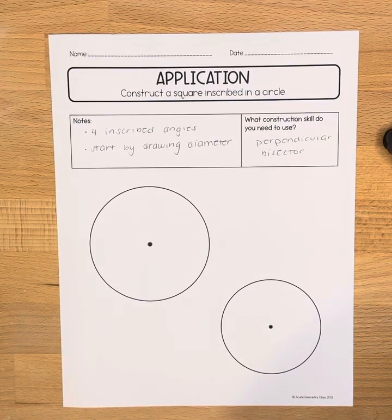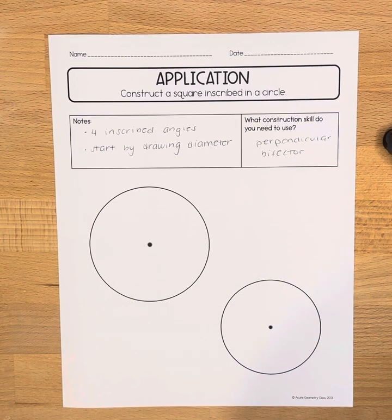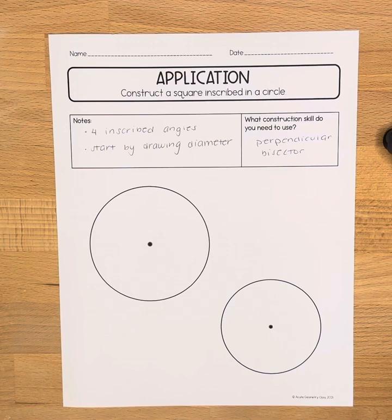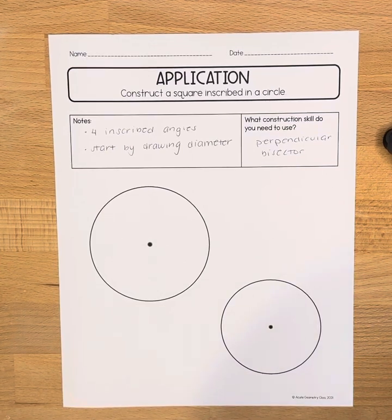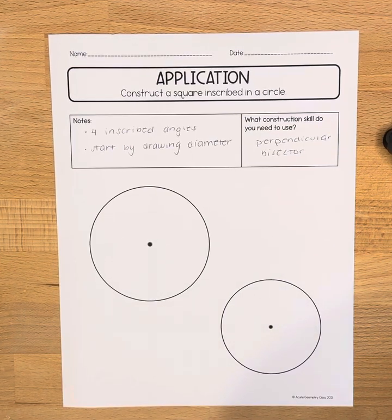In this video we'll be constructing a square that is inscribed in a circle. Some notes to start off. An inscribed square is going to have four inscribed angles. That means the vertex of each angle is on the circle and the rays of the angle are basically cords of the circle.